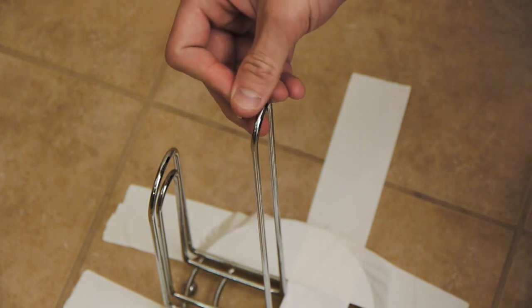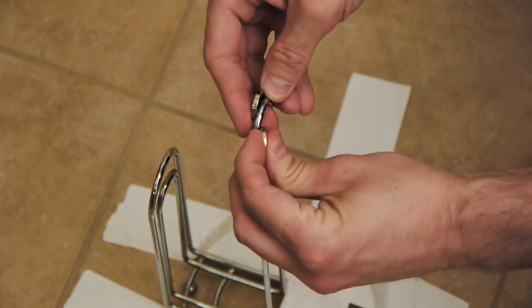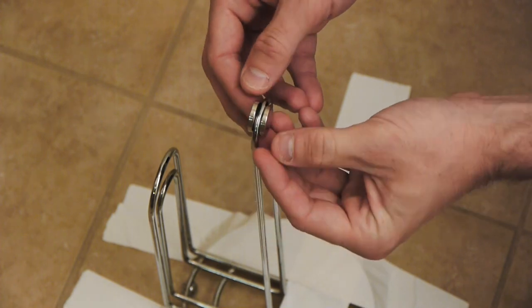For this experiment we're gonna start off by putting some magnets on a paper towel holder and then taping that paper towel holder to the ground. We do not want it to move. You'll see why.